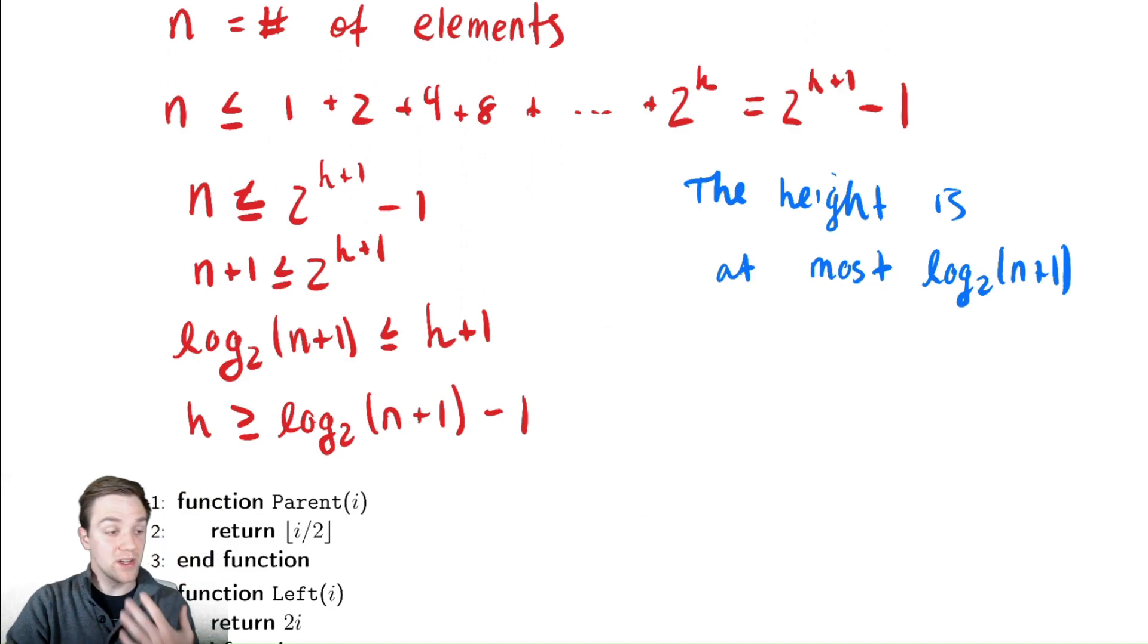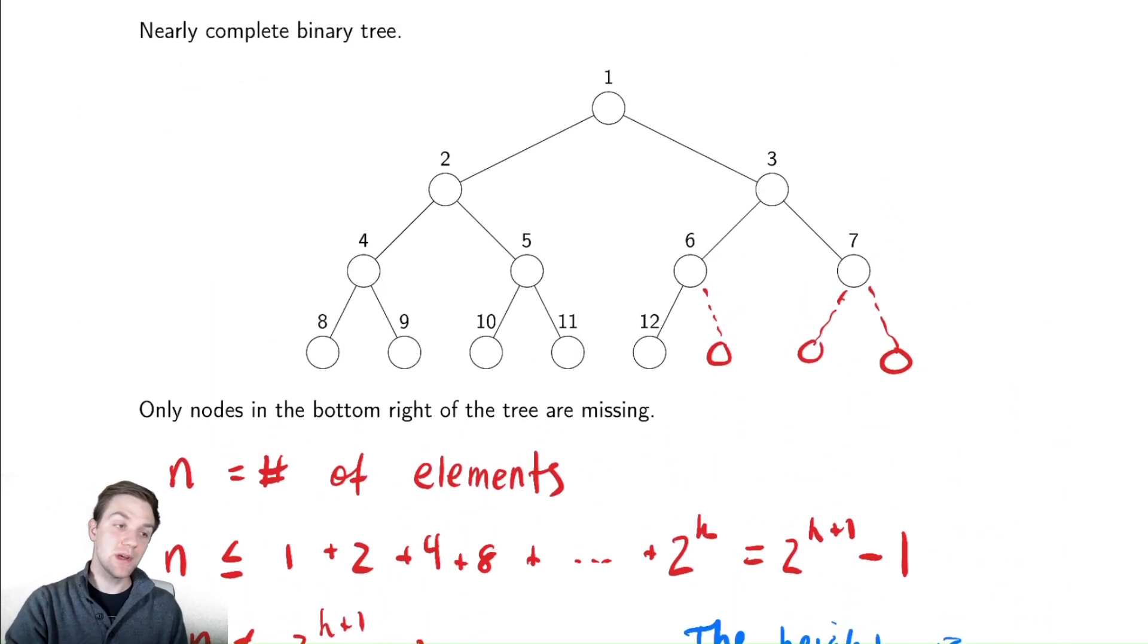Now, that is one useful fact we have. The other one is we claimed we could represent this as an array and that is true. But we want to understand how can we access this and traverse the tree in a reasonable way. Typically the way you're going to traverse a tree is by following pointers in the tree and then figure out where you go. So what is going to be the way I access the left node if I'm at a current node?